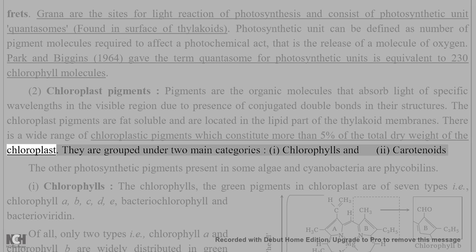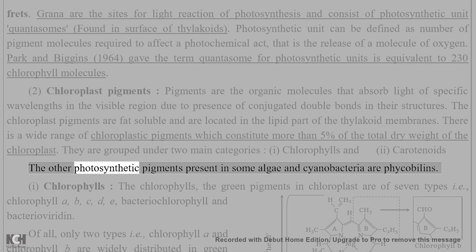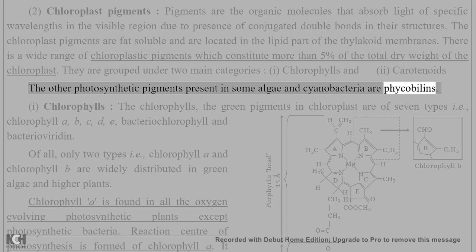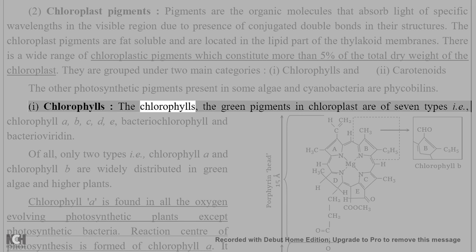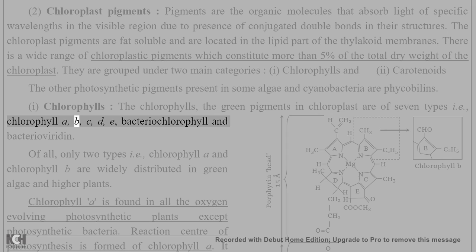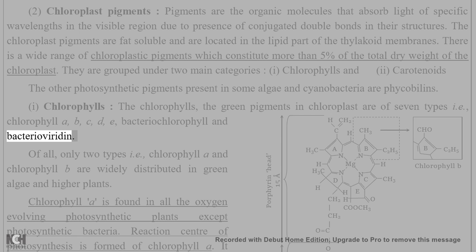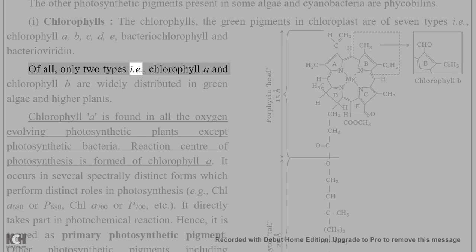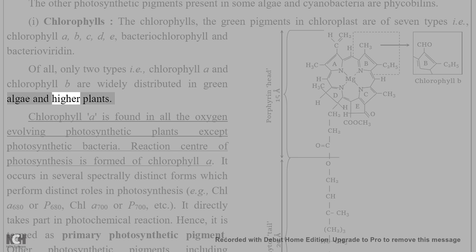Chloroplast pigments are grouped under two main categories: chlorophylls and carotenoids. Other photosynthetic pigments present in some algae and cyanobacteria are phycobilins. The chlorophylls, the green pigments in chloroplasts, are of seven types: chlorophyll a, b, c, d, e, bacteriochlorophyll, and bacterioviridian. Of all these, only two types — chlorophyll a and chlorophyll b — are widely distributed in green algae and higher plants.